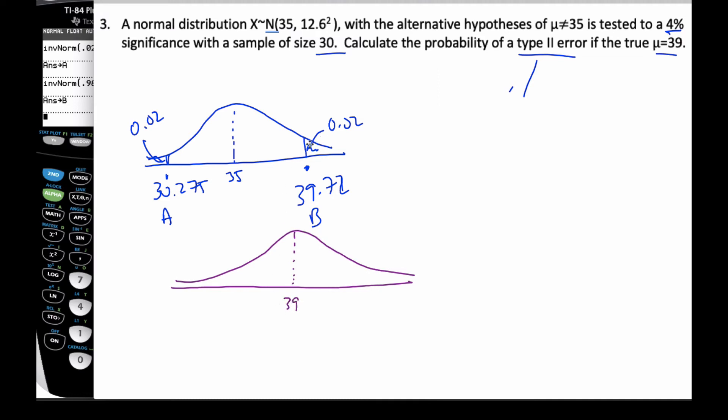I bring down this value here, my 39.72. I bring down this value here as well, this is 30.275. And the probability of a Type II error is in here.